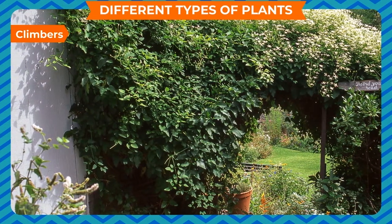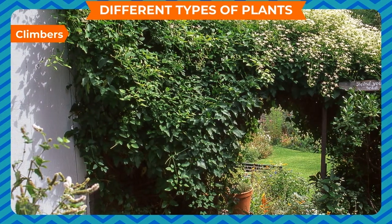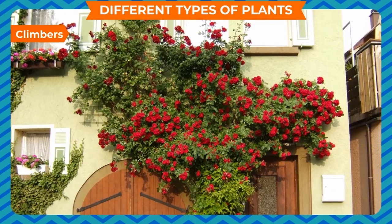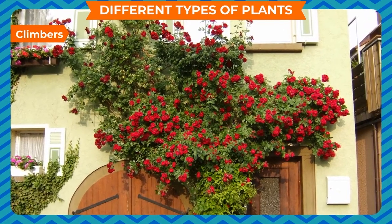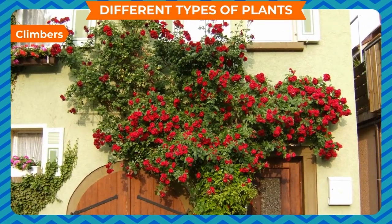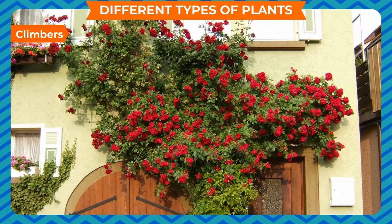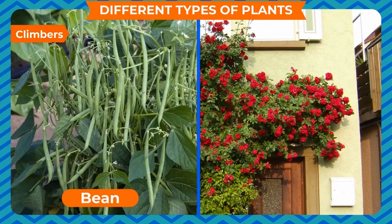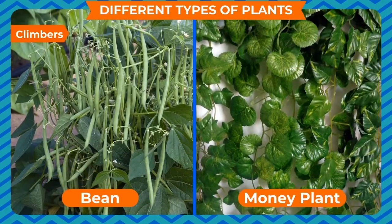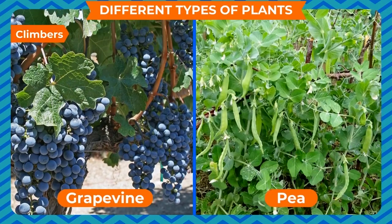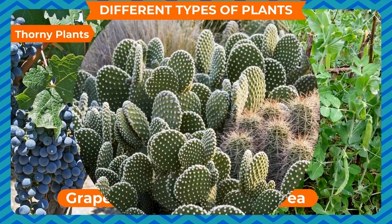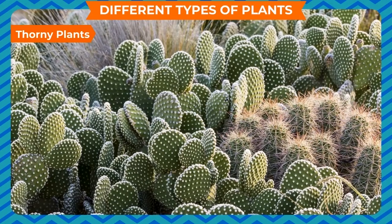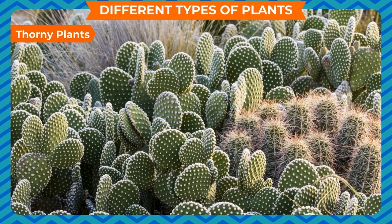CLIMBERS: These plants need some support to stand upright, as they have a weak stem. These are known as CLIMBERS. They climb up with the help of a support such as a wall or a stick, and twine around the stick. Bean, Money plant, Grapevine, and Pea are CLIMBERS.